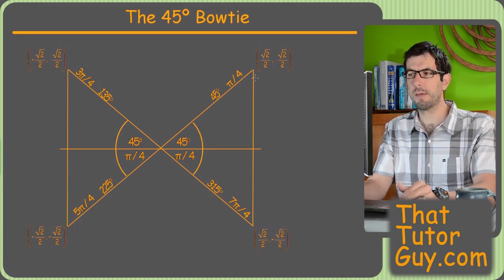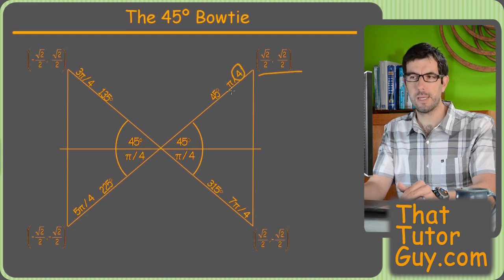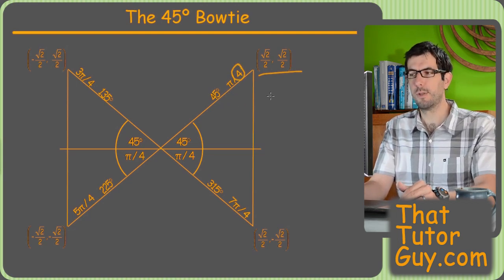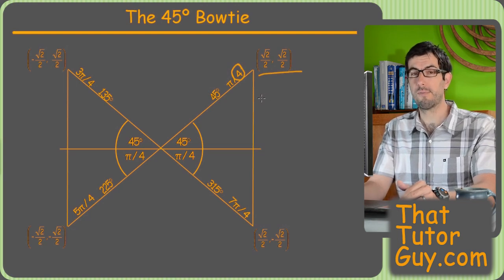45, same deal. Easily my favorite, because everything's root 2 over 2, right? So, any time you see a 4 in the denominator, if you're working with radians, or you see a root 2 over 2 for anything, you know that both sine and cosine are root 2 over 2, and that you're dealing with 45-degree reference angles.